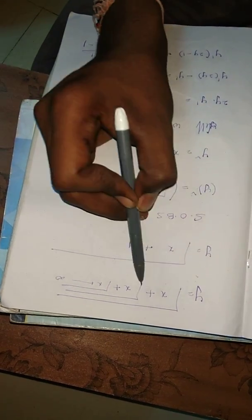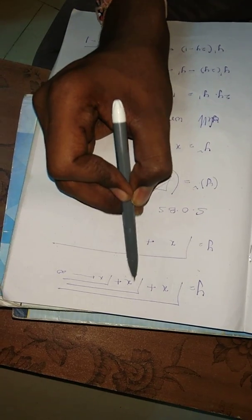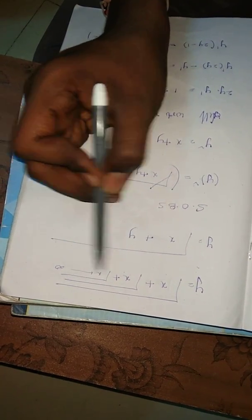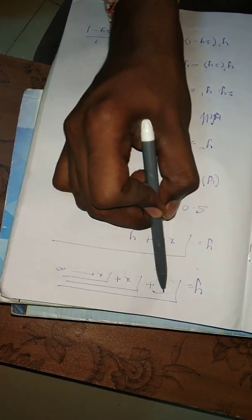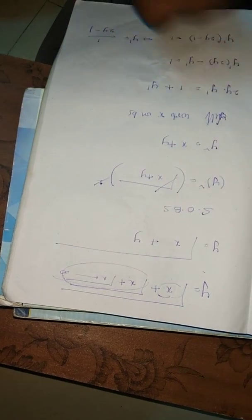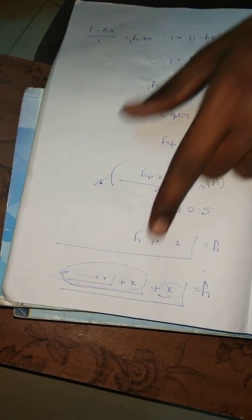y is equal to √(x + √(x + √(x + ...))). This is a nested infinite radical.